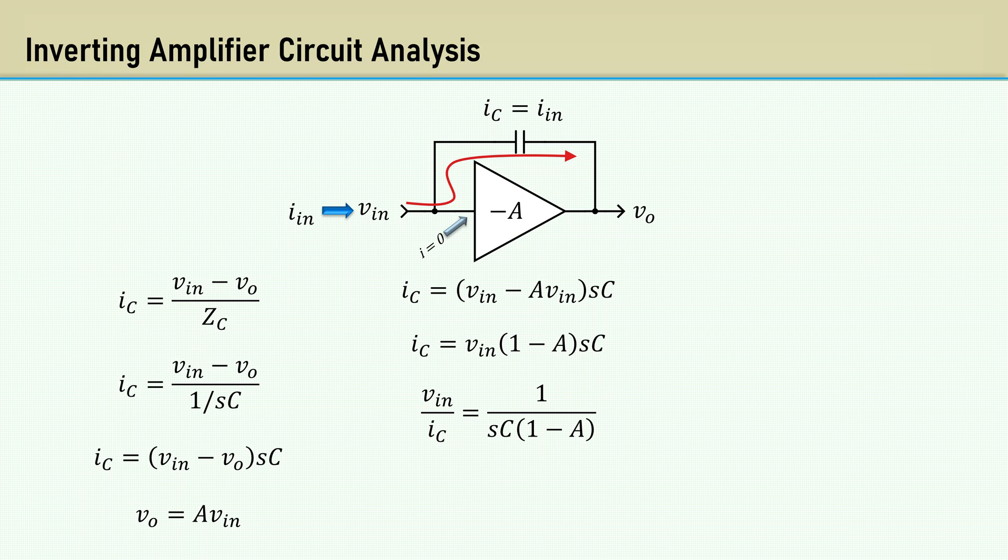which is the impedance looking into the input. That would be the Miller capacitance as 1 over SCM. Reciprocate both sides to eliminate the fraction. The S's cancel, so here we have the equation for the Miller capacitance.